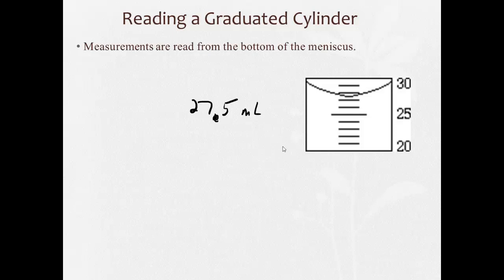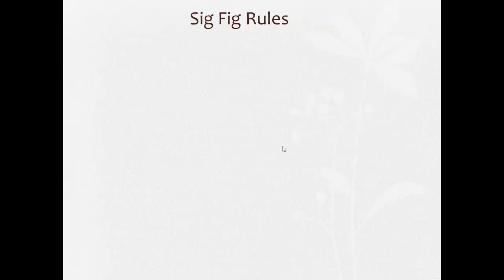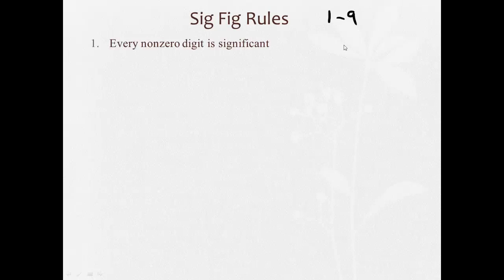Now for the significant figure rules, which we need to learn and memorize. Rule one: if a digit is not zero, it is always significant — digits 1 through 9 are always significant. So in a number like 4.56, all three digits are significant, giving three significant figures.